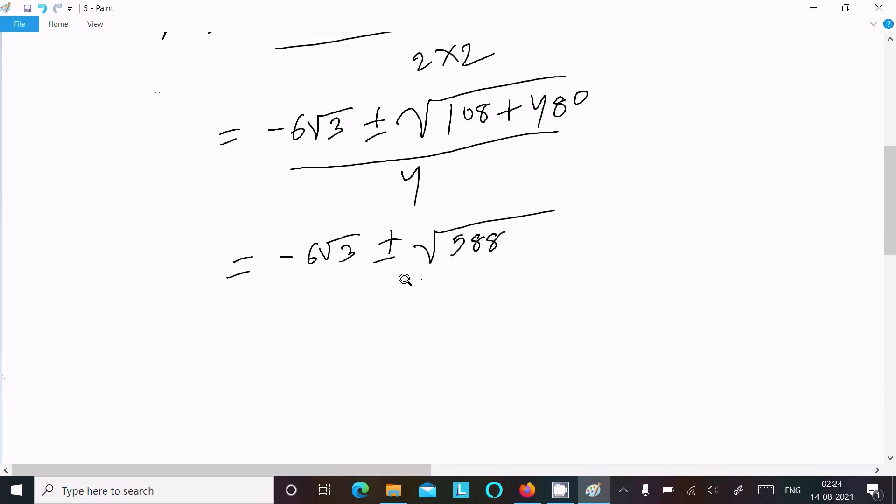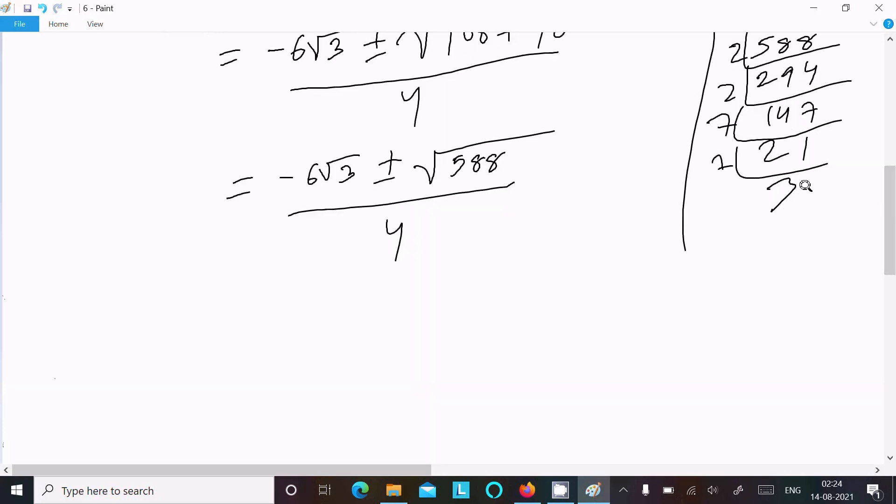So 588 divided by 4. Now let's take 588 and find its factors: 2 × 2 = 4, then we get 147, which is 7 × 21 = 7 × 3 × 7.